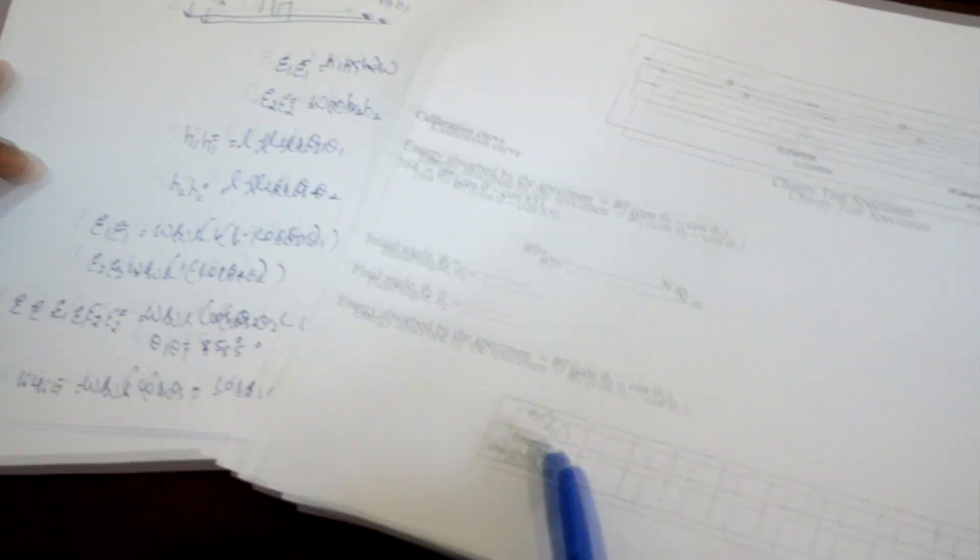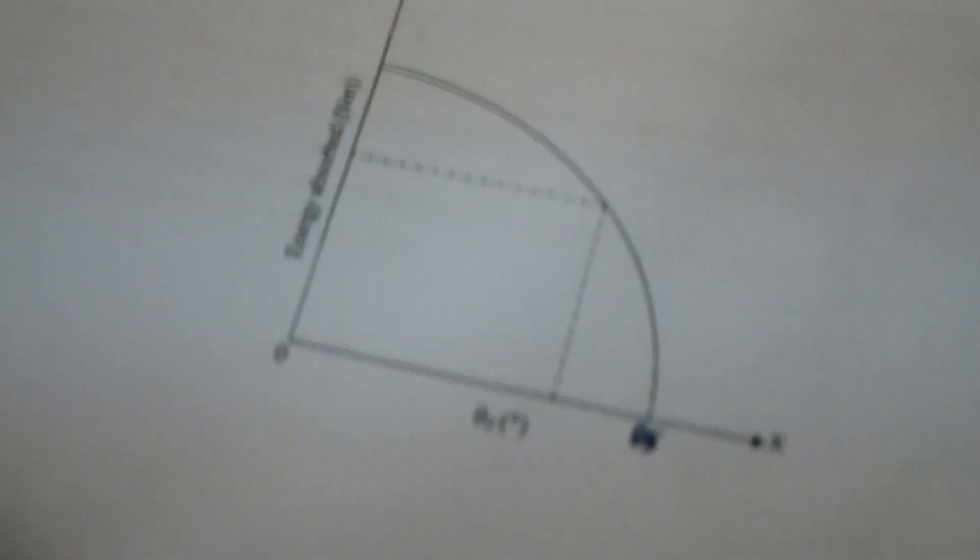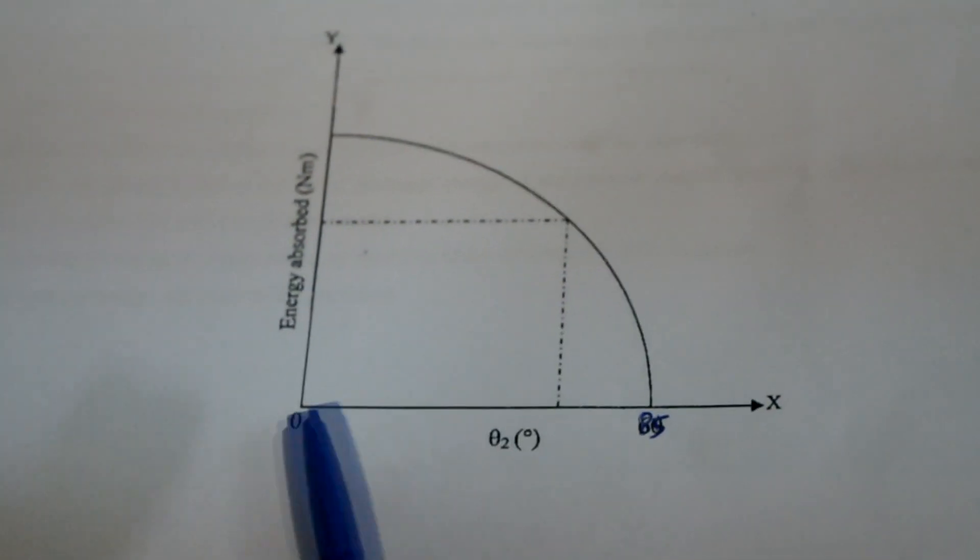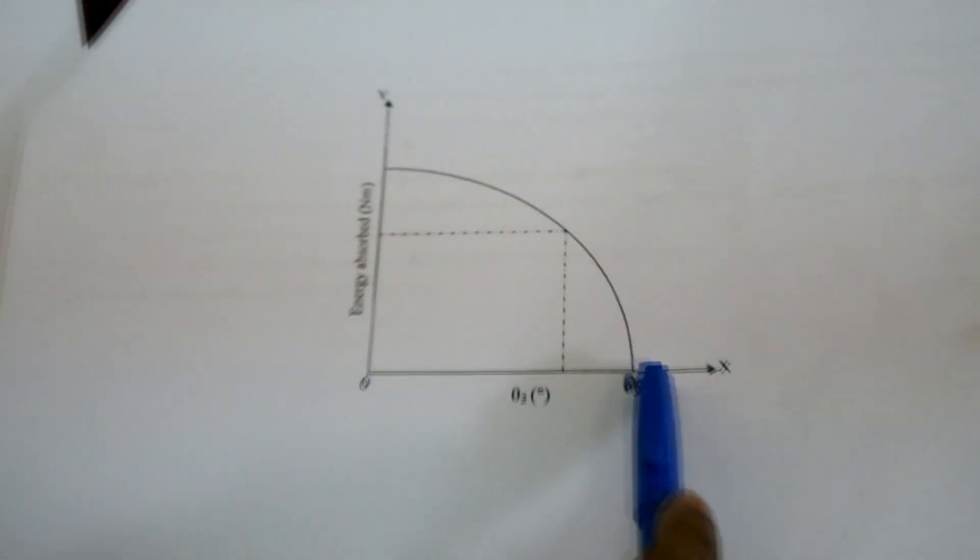These angles can be calculated and a calibration curve can be drawn. We know that when θ2 is zero, the maximum energy absorbed is 164 joules, and when θ2 is equal to 85 degrees, the minimum energy of zero joules is absorbed by the specimen.